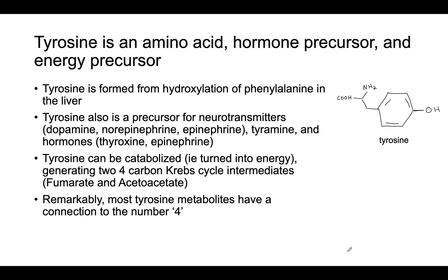As I mentioned, tyrosine is a precursor for the neurotransmitters dopamine, norepinephrine, and epinephrine, as well as tyramine, which is a vasoactive amino acid, and several hormones, including thyroxine and epinephrine.